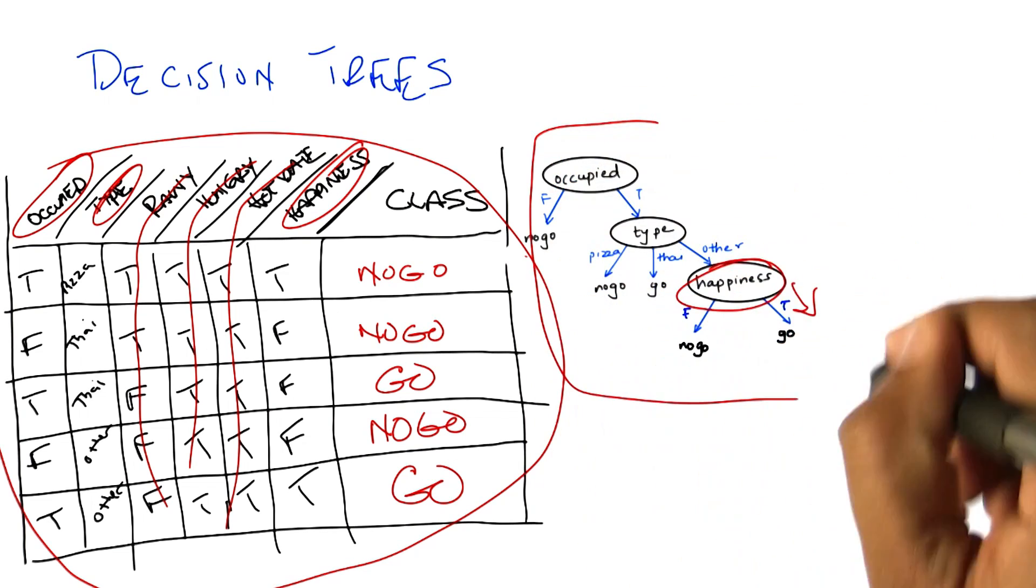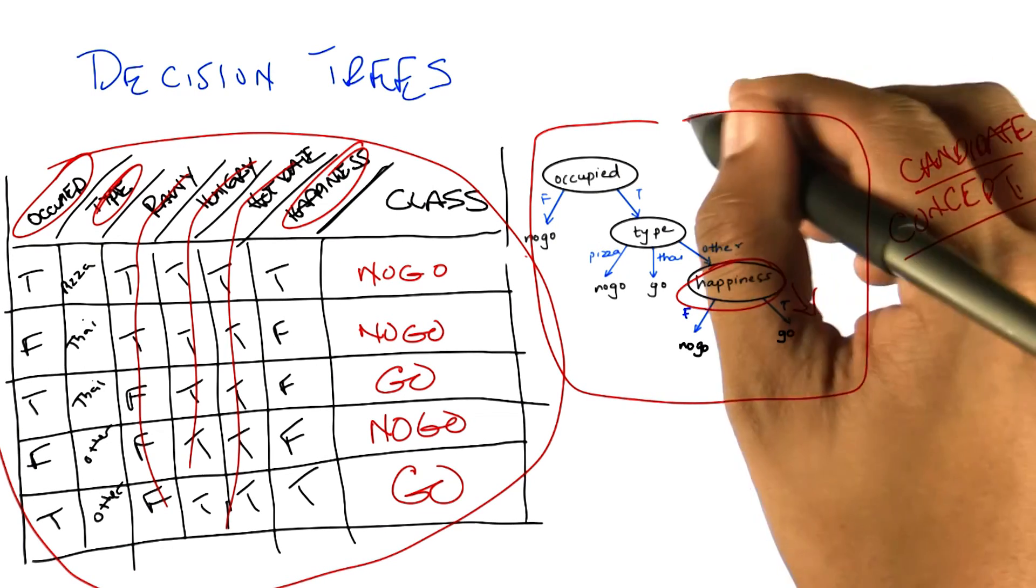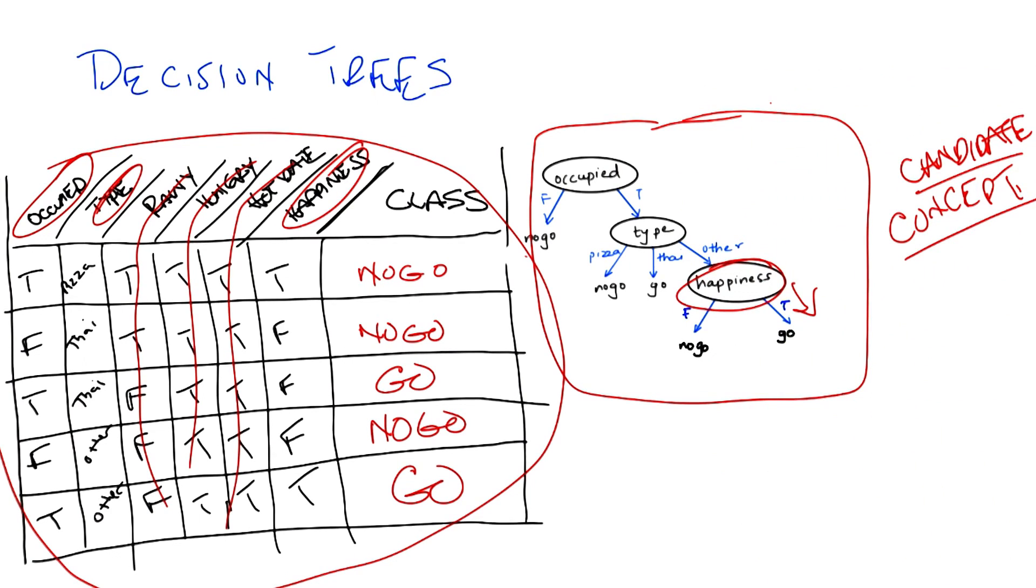And this particular tree here is our candidate concept. So there are lots and lots and lots of other trees that we might have used. We might have used a tree that also asked questions about whether it was rainy or not, or asked questions about whether you were on a hot date or not. But we didn't. We picked a specific tree that had only these three features and only asked in this particular way. So what we're going to talk about next is how we might decide whether to choose this tree over any of the other possible number of trees that we might have chosen instead.